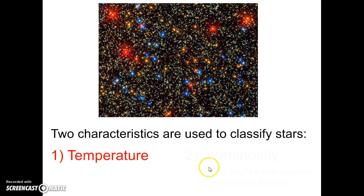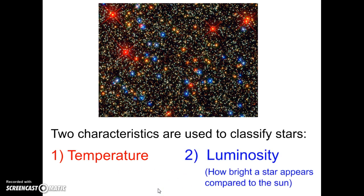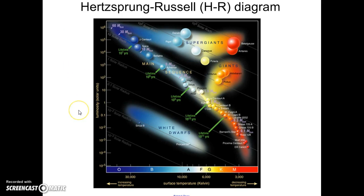The second way we classify stars is by looking at their luminosity, or how bright they appear compared to our sun. Most stars we see are so far away that we can't accurately tell how bright they are, but we can compare their brightness to our sun. Astronomers have created a chart to classify stars called the Hertzsprung-Russell, or HR diagram, named after the scientists who came up with it.